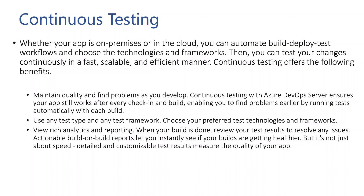Continuous Testing with Azure DevOps Server ensures your app still works after every check-in and build, enabling you to find problems earlier by running tests automatically with each build. Whenever you make a code change and the pipeline is set up, the build will run and the tests will also run in the pipeline. So whenever you make a code change, if there are any build failures or test-level failures, you can fix them right away and push to production so your code quality is always high.